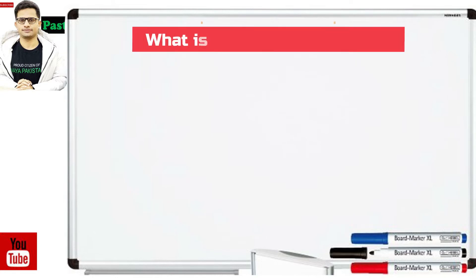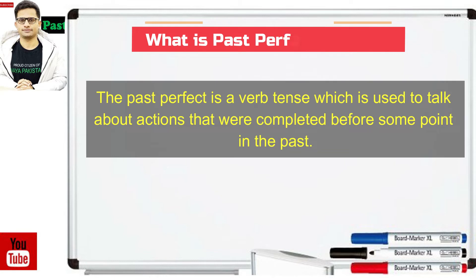What is past perfect tense? The past perfect tense is a verb tense which is used to talk about actions that were completed before some point in the past. Past perfect tense کیا ہوتا ہے؟ اس کا استعمال ماضی میں کسی نکتے سے پہلے مکمل ہونے والے کام کے بارے میں بات کرنے کے لیے کیا جاتا ہے۔